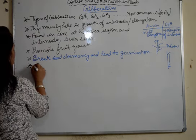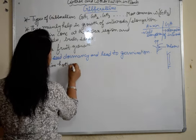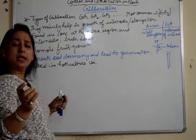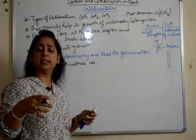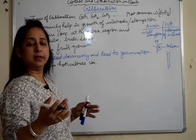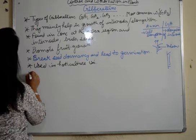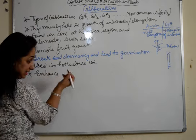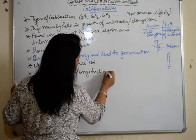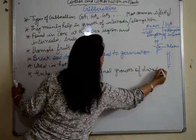It is also used in some horticulture industries. Horticulture industries are where vegetables and fruits are grown, and they study cloning and tissue culture. These things are used there. It is also used to enhance or increase the longitudinal growth of dwarf plants.